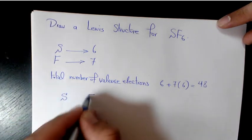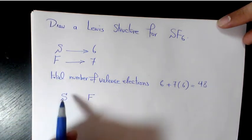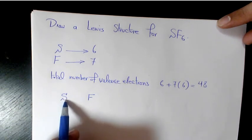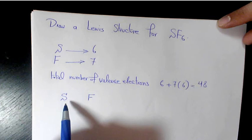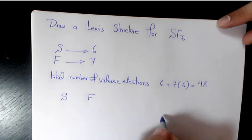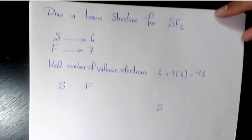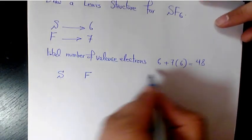Next we need to find out the central atom. We have sulfur on the other hand we have fluorine, so because we have only one sulfur, the central element is going to be sulfur. Sulfur belongs to period 3, so it can have more than 8 electrons and doesn't necessarily obey the octet rule, so it can be overfilled.